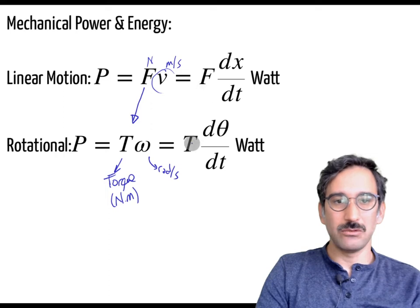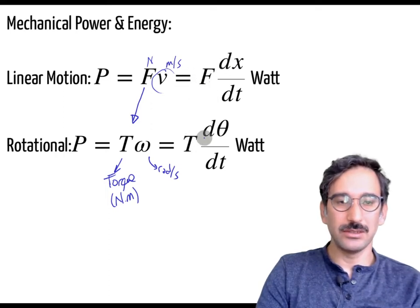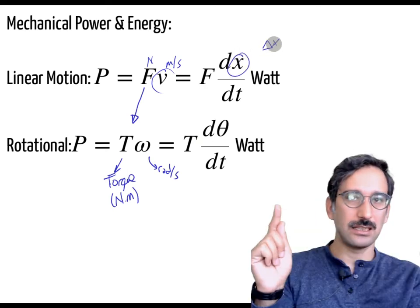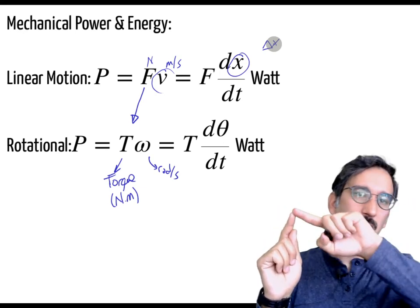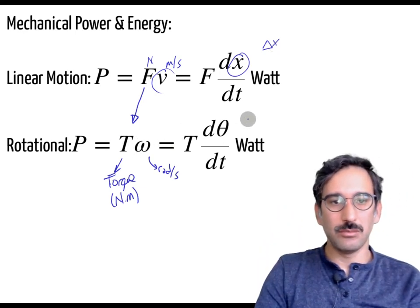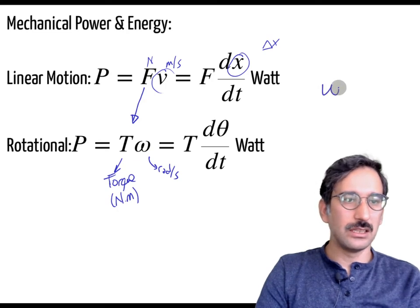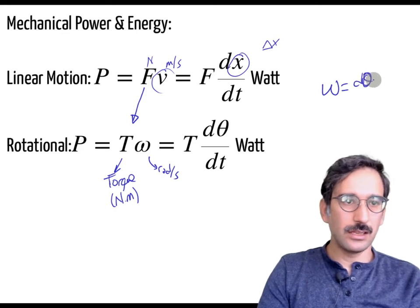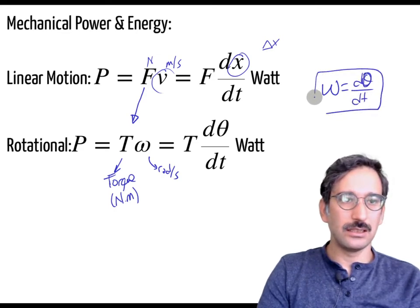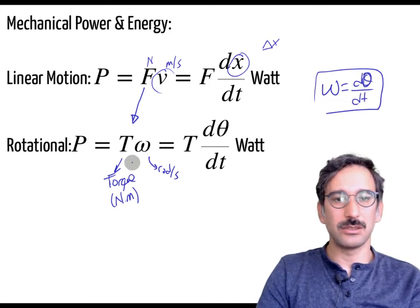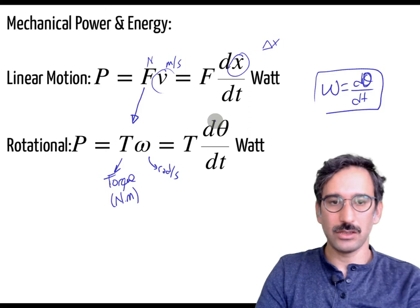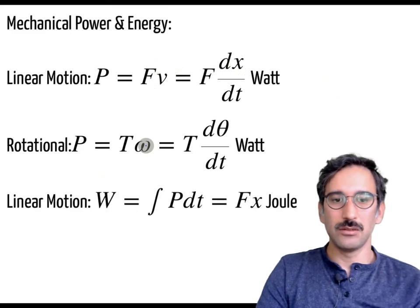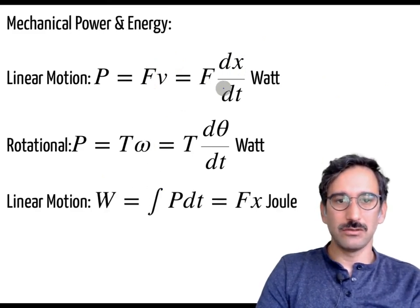Instead of a linear displacement like delta-x, we think in terms of rotation. Omega, the rotational speed, equals dθ/dt — the change of angular position with respect to time. So the analogy is: instead of force we use torque, and instead of linear speed we use radians per second.